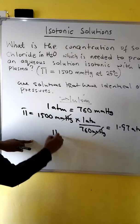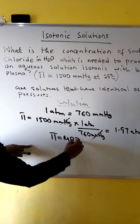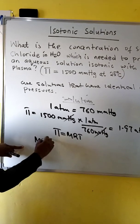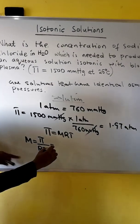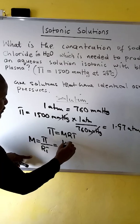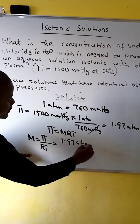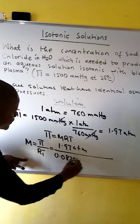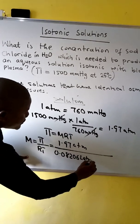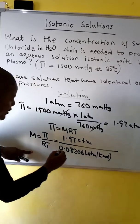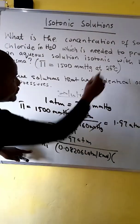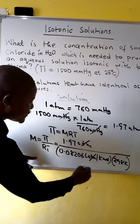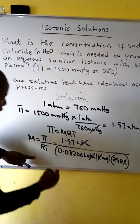So this is our osmotic pressure in atmospheres. We know that osmotic pressure is equal to MRT. Solving for M gives: M is equal to osmotic pressure over RT, which is equal to 1.97 atmospheres over R (0.08206) per kelvin, times T which is 25 degrees Celsius converted to kelvin: 298. The atmospheres cancel and kelvin cancels.